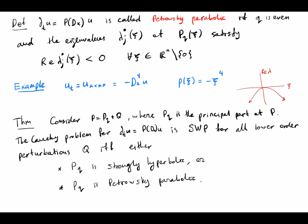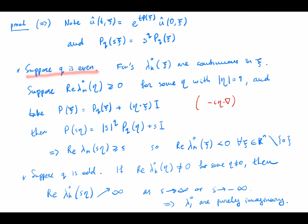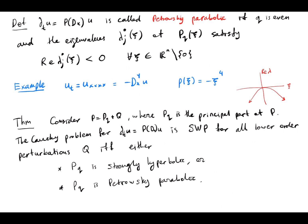We want to prove the forward implication first. In free space, our PDE becomes just ODEs — one ODE for each xi in the frequency space. We split this into two cases. First, suppose that q is even. If q is even, what we need to prove is that the real parts of the eigenvalues are strictly negative.